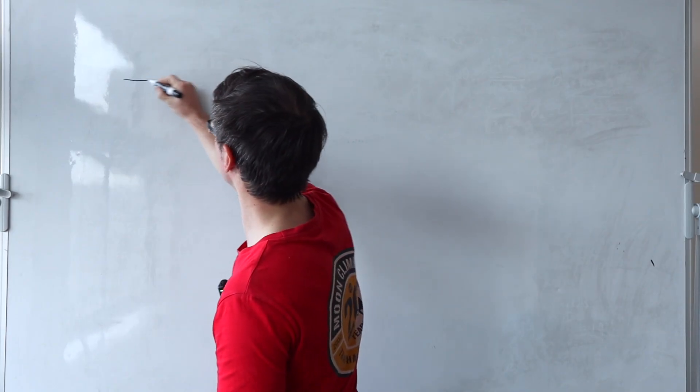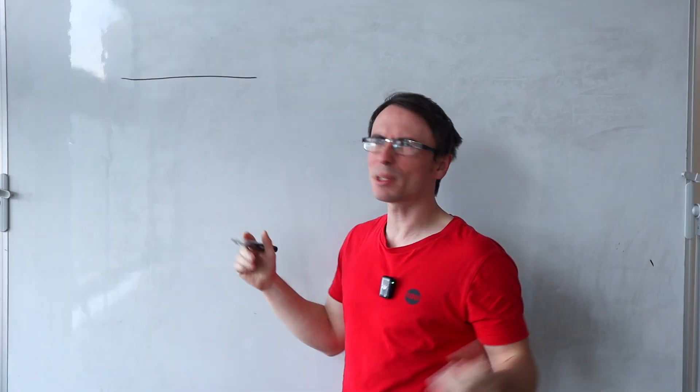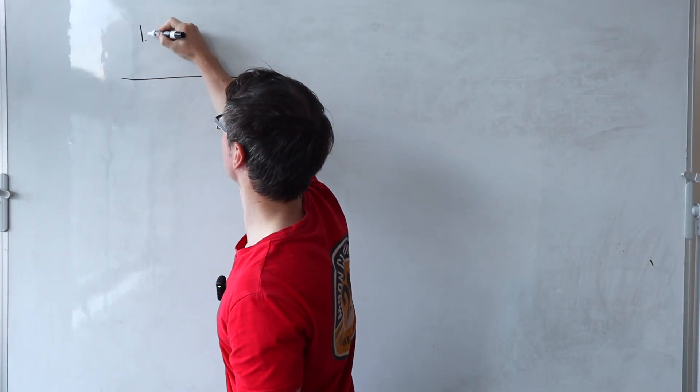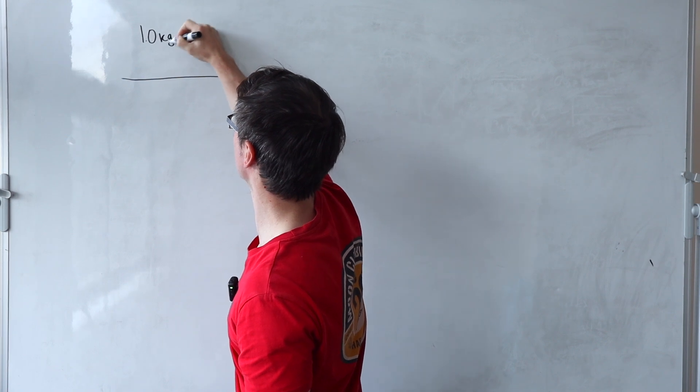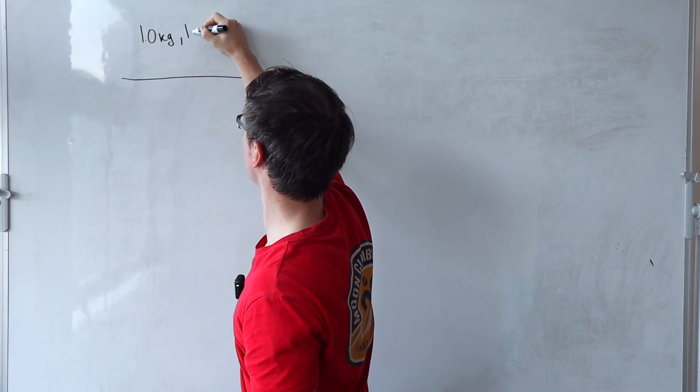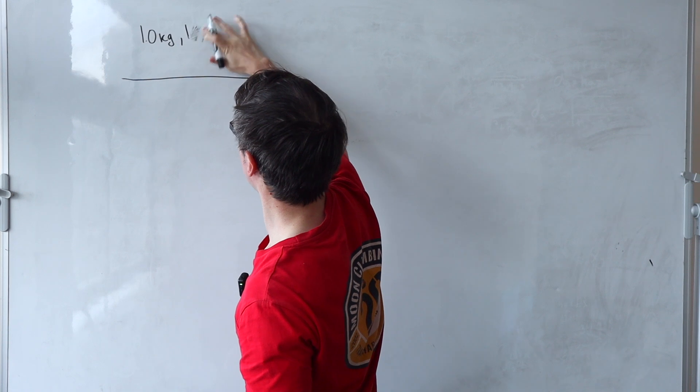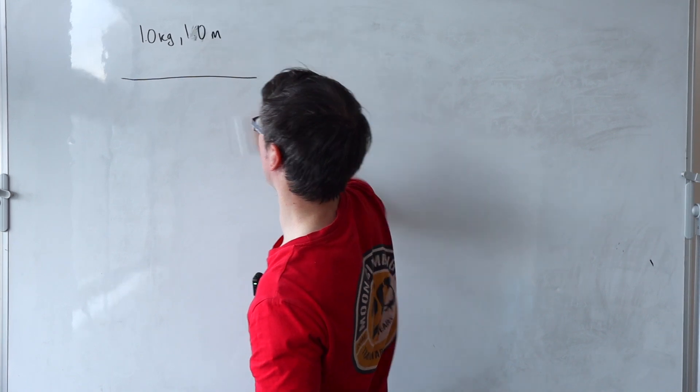Imagine that I give you a horizontal bar. Let's keep the numbers simple. So I'm going to say that this has a mass of one kilogram and it's also one meter long.